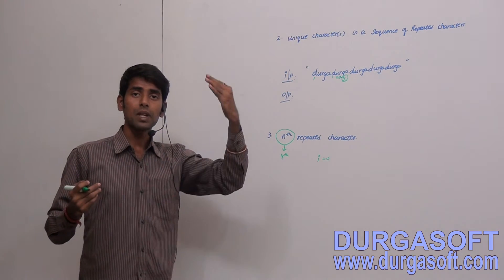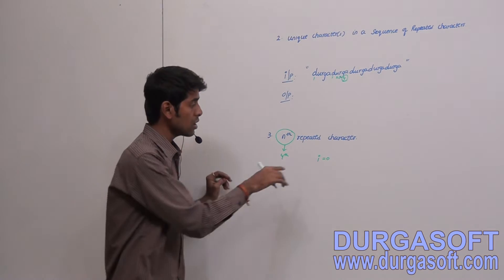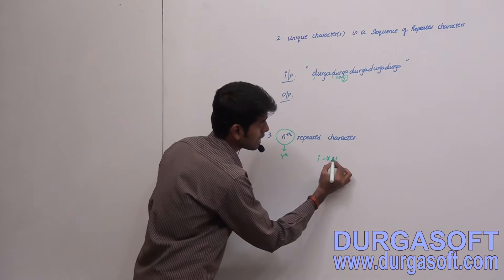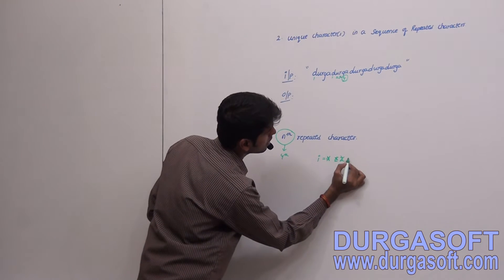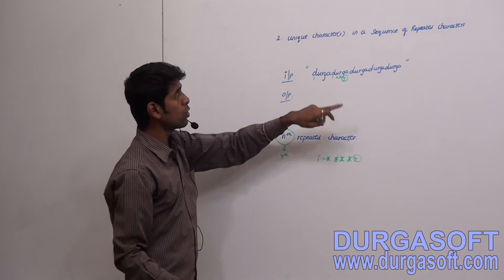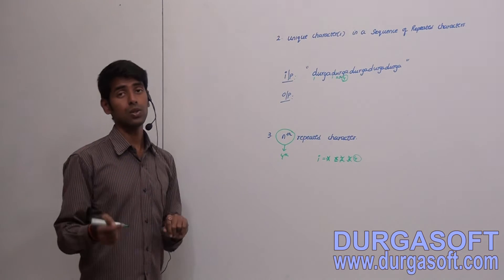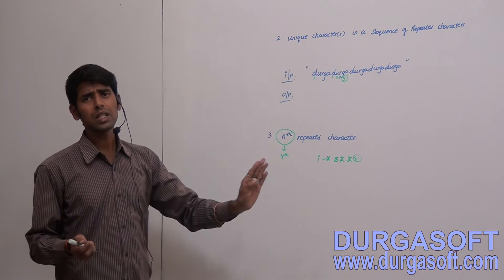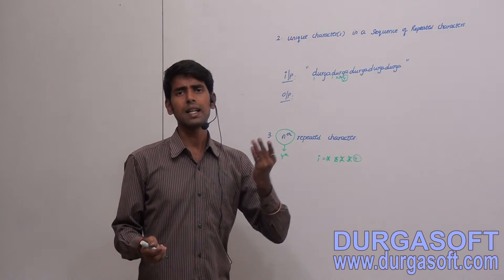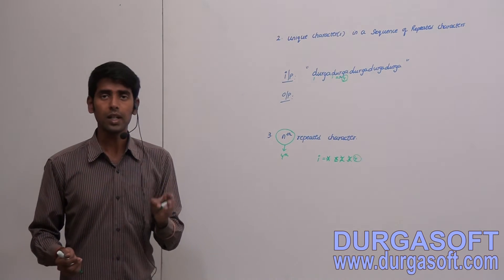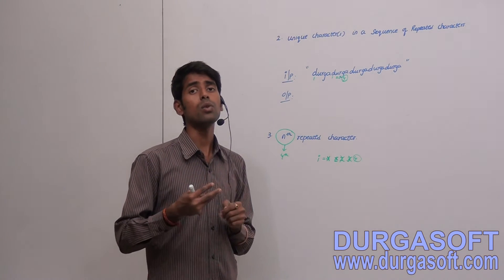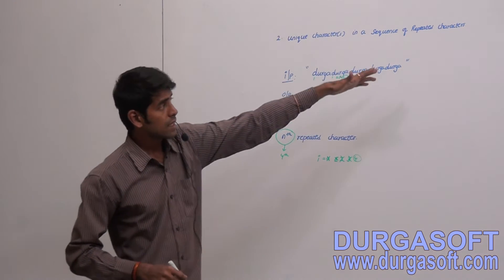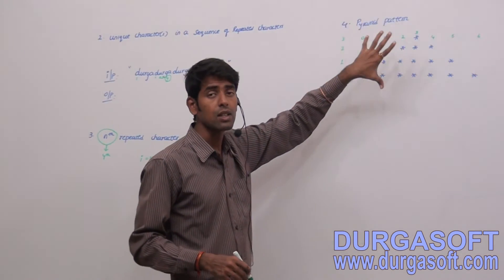For each repeated character, I increment that variable. So for 'u' it increments to 2, 'r' to 3, 'g' to 4. If the value equals the Nth one — say 4 — then print that particular character. Some interviews may also ask for the index of the Nth repeated character. You can also use utility classes or collection framework objects, but the main intention is to develop your own methods — your own API.